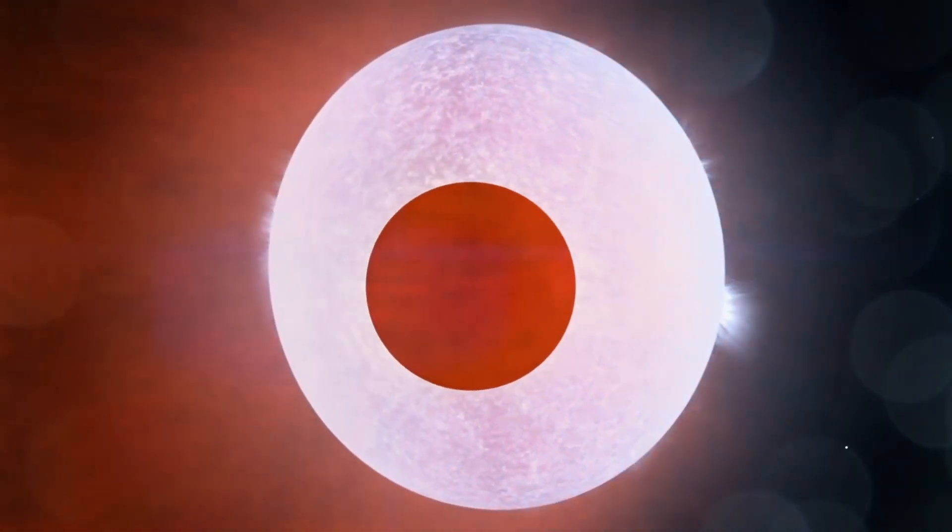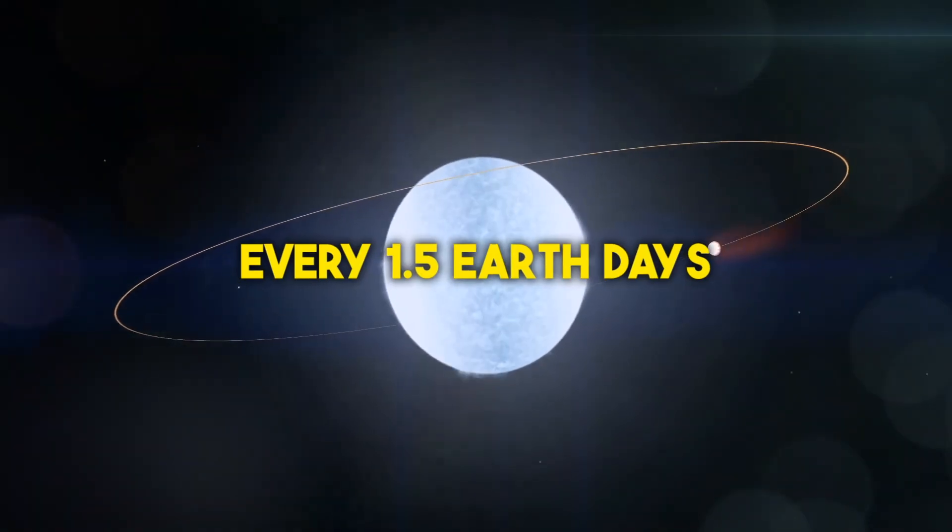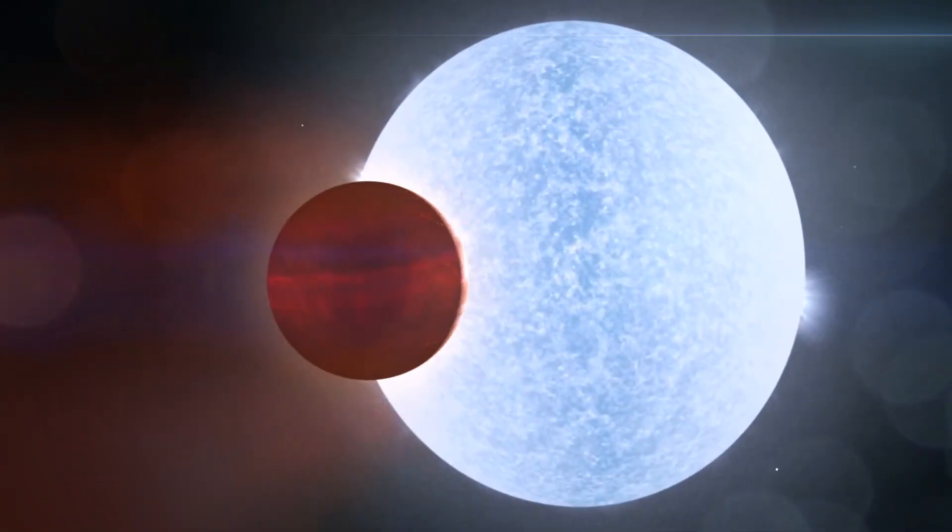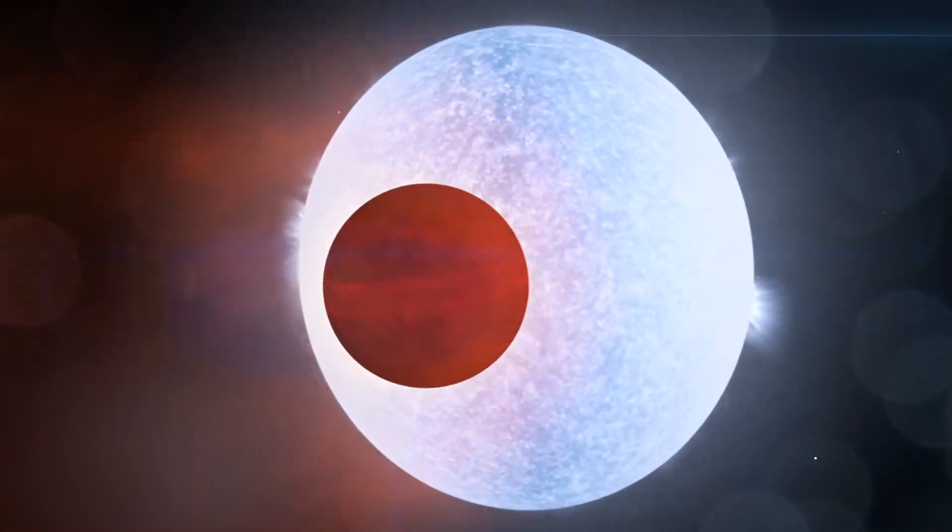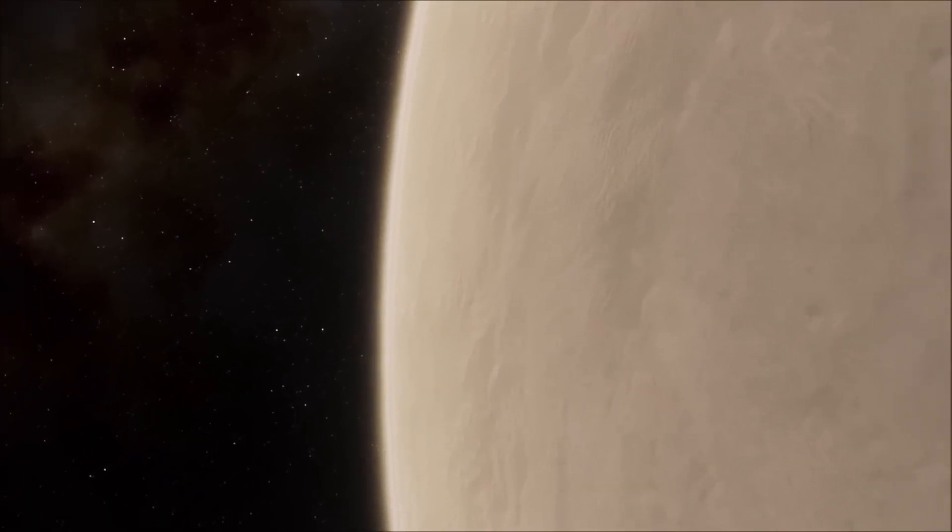Imagine a planet cozying up to such a scorching star, KELT-9b to be exact. This gas giant orbits its blazing host at a distance much closer than Mercury's cozy orbit around the sun, completing a full orbit every 1.5 Earth days, compared to Mercury's leisurely 88-day journey. The result? This cosmic inferno makes Venus look like a cool breeze on a summer day.